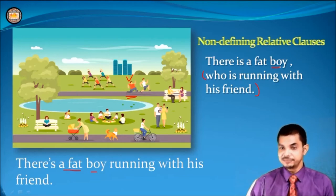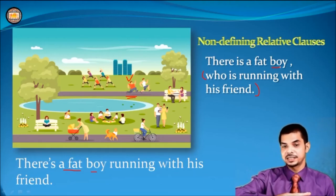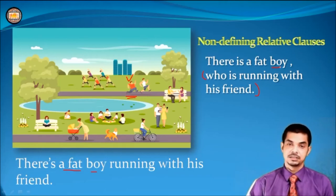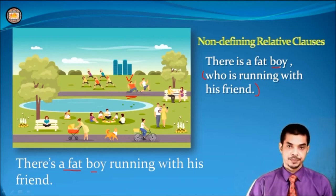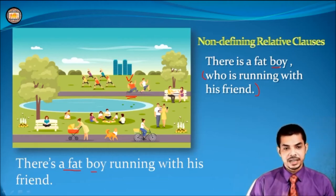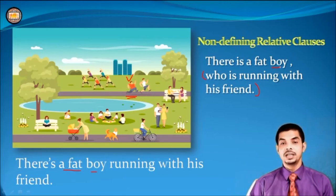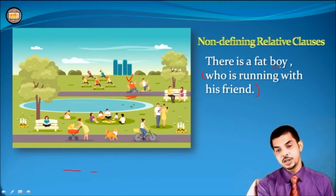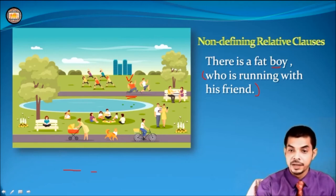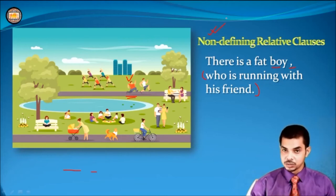Write down this sentence again, then cover the relative clause with your hand. Now read it: 'There is a fat boy.' No problem with the meaning — you don't need the support of some extra sentence to complete this expression. It's already defined by the adjective 'fat.' So what happens here? We only add extra information with the relative clause. And here you must remember: you have to put a comma for non-defining relative clauses. For defining relative clauses we don't use a comma, but for non-defining relative clauses we have to use a comma.